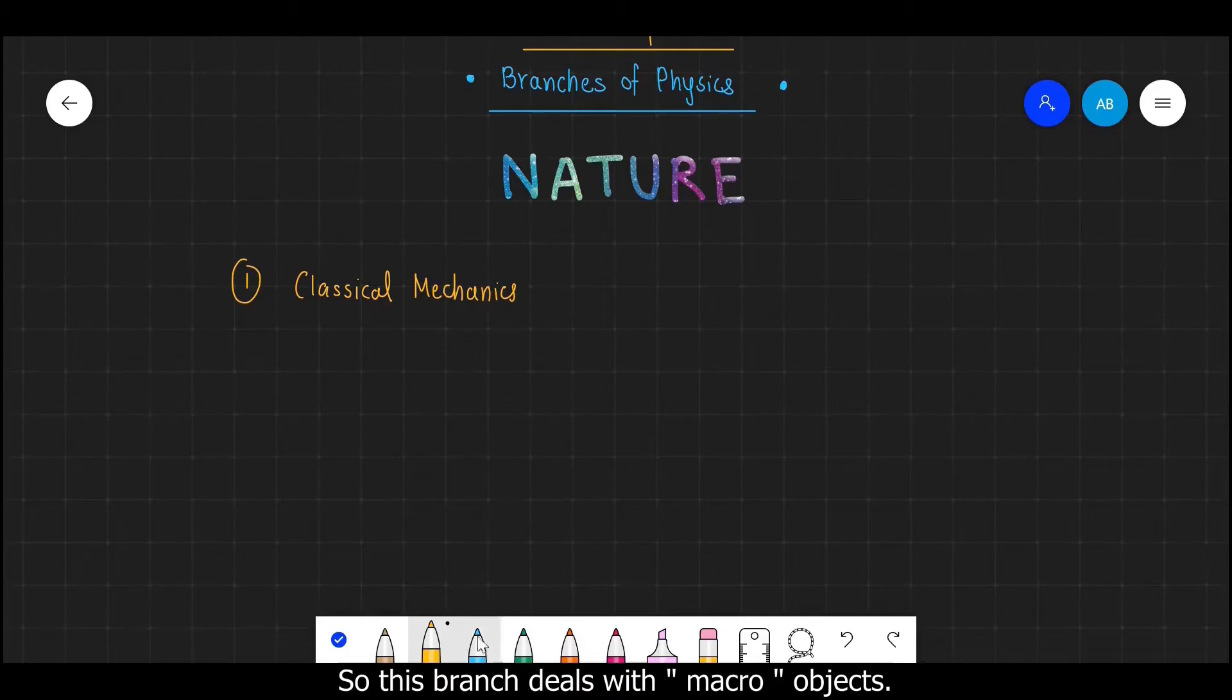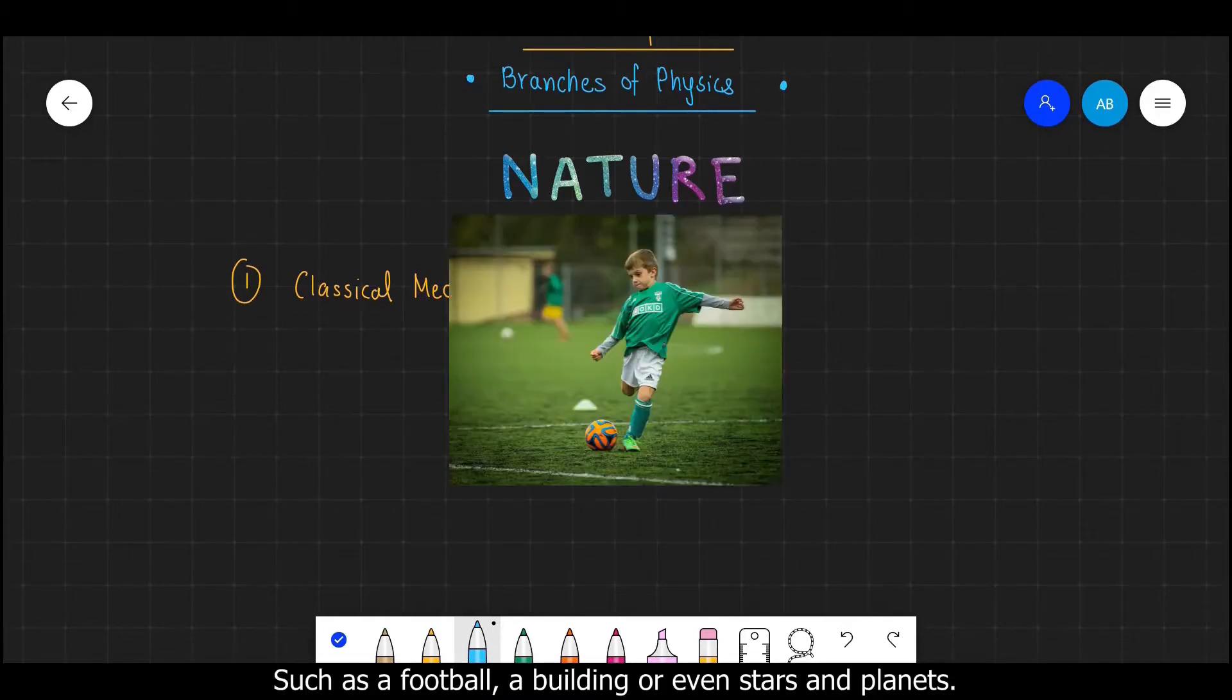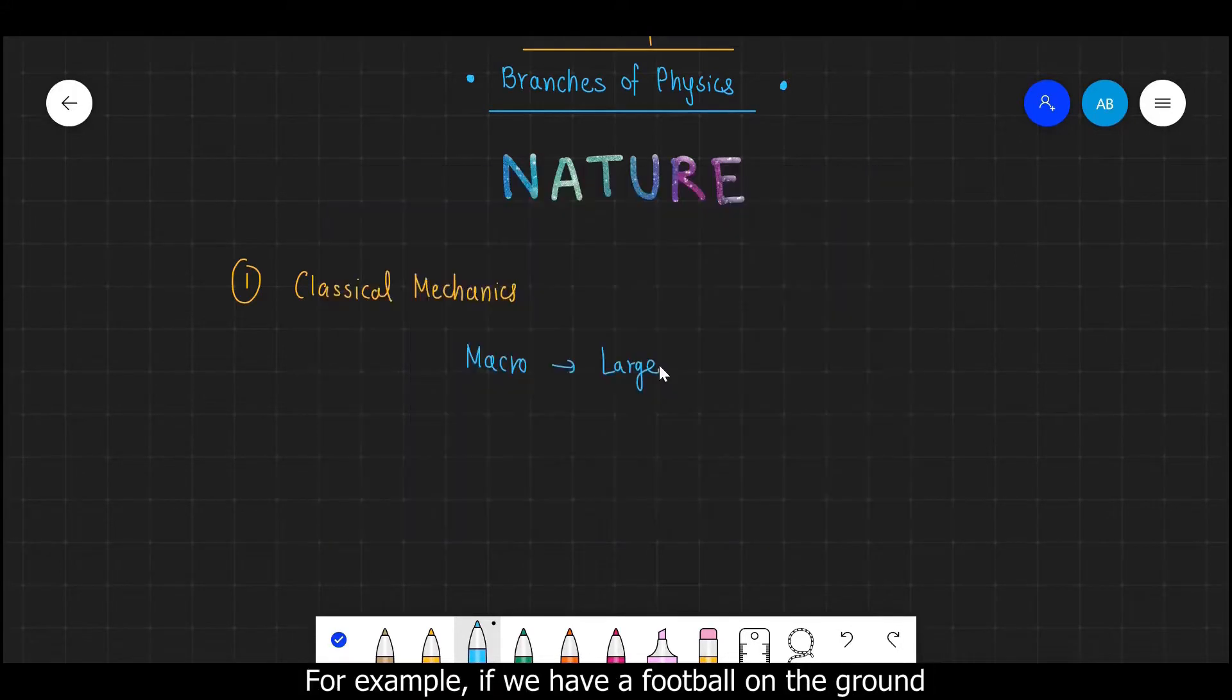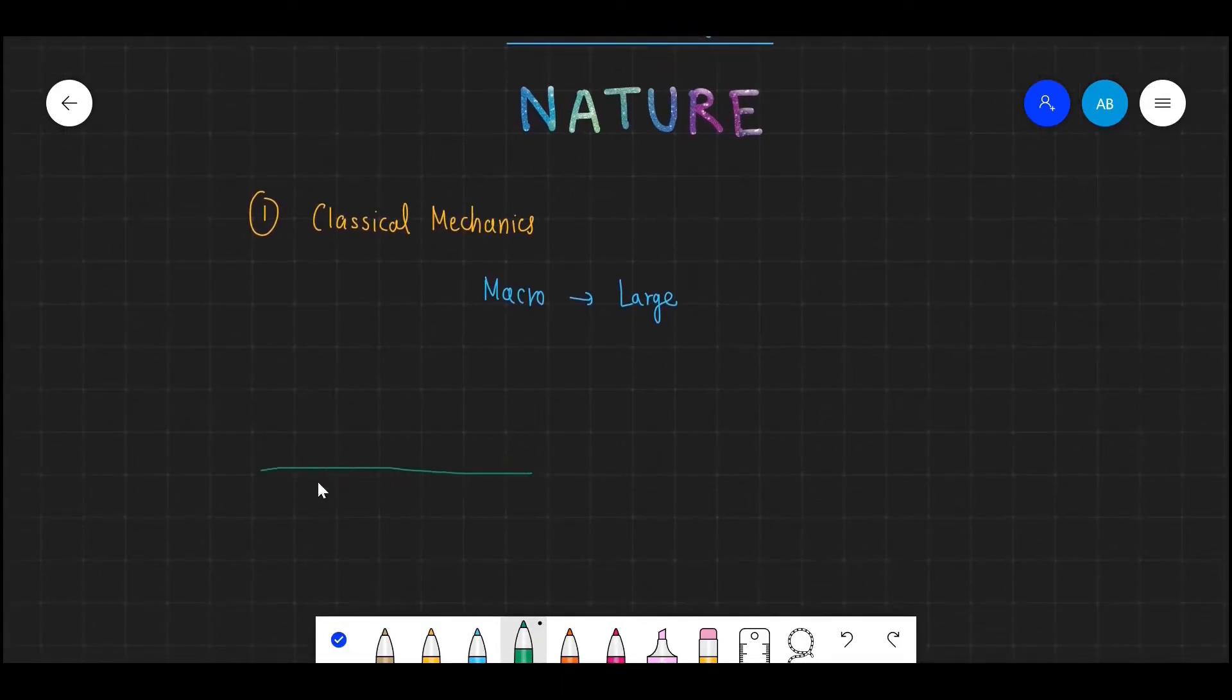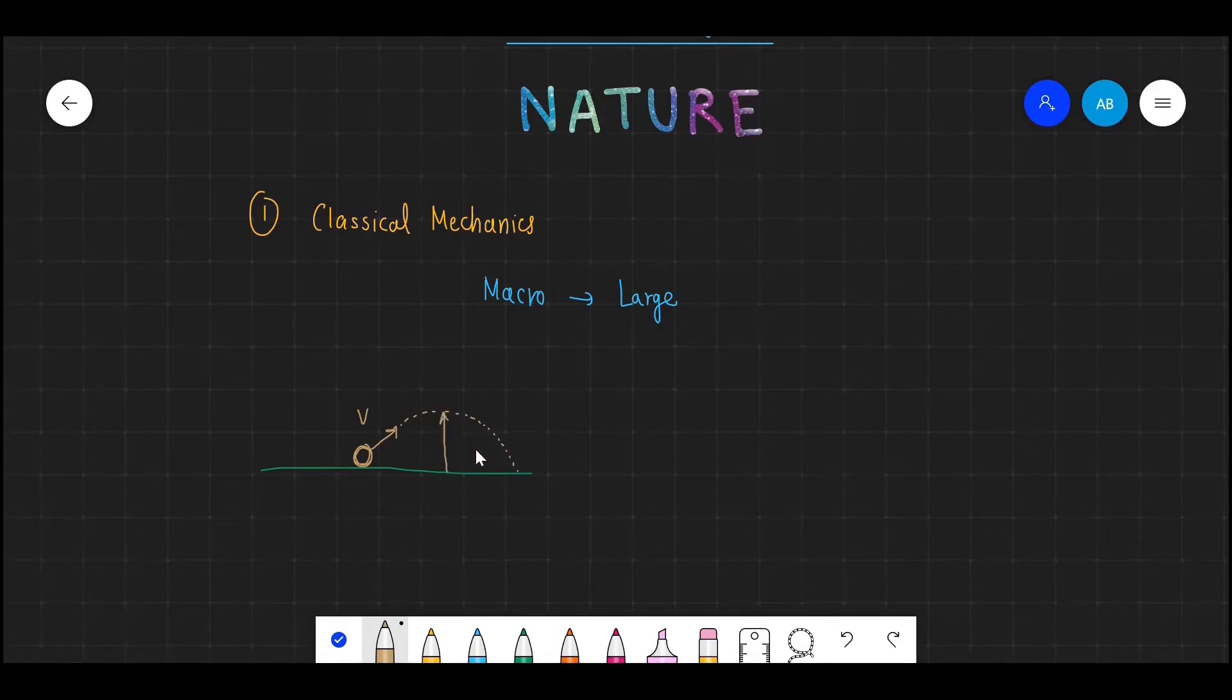This branch deals with macro objects. Macro means large objects, large scale objects such as a football, a building, or even stars and planets. For example, if we have a football on the ground and I kick it with some velocity V, then Classical Mechanics can help me to predict where this ball will fall on the ground or how much high will it go during its motion.